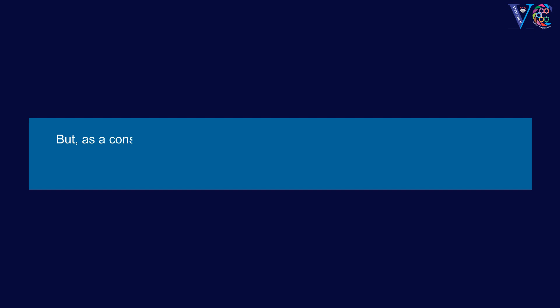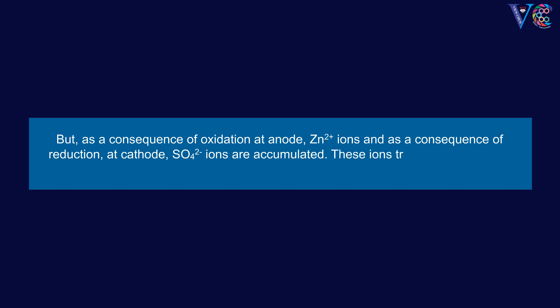But, as a consequence of oxidation at anode, Zn-2-plus ions and as a consequence of reduction at cathode, SO4-2-minus ions are accumulated. These ions travel into salt bridge and form corresponding ionic compounds like zinc sulfate and copper nitrate.